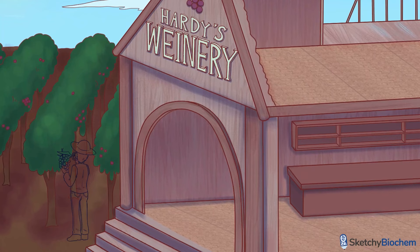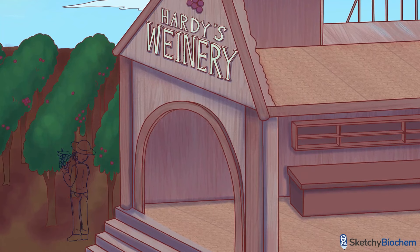Take a look at those glowing Chernobyl clusters — those could not be USDA approved. Mutations modify the gene pool, and they can delete, duplicate, or alter a particular gene. So for a population to be in Hardy-Weinberg equilibrium, mutations must not have occurred.